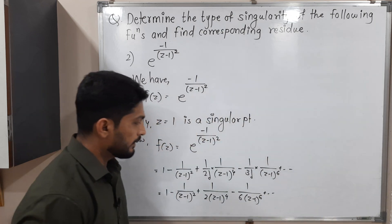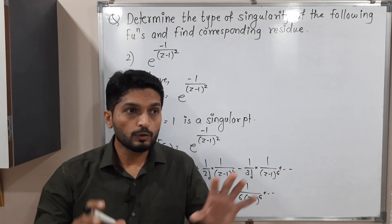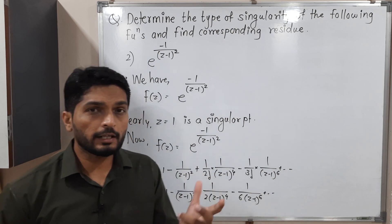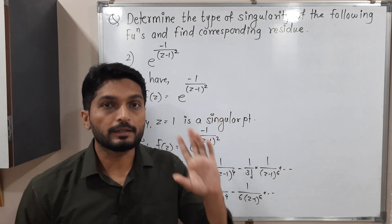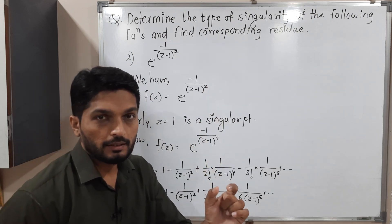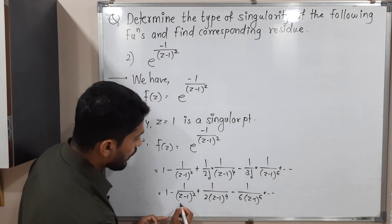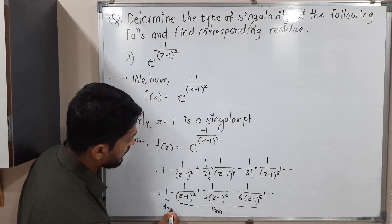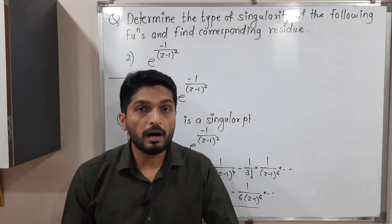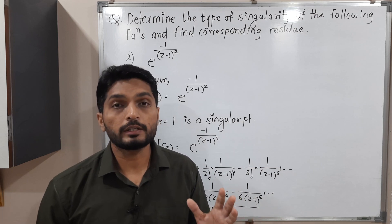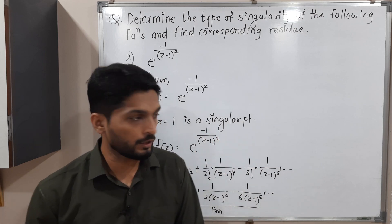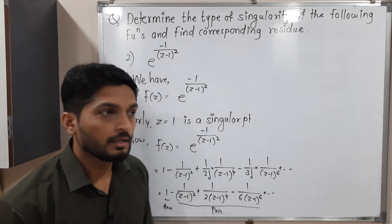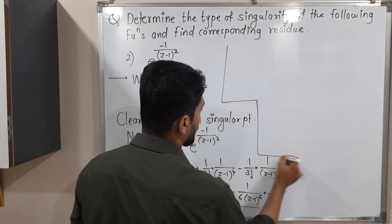The Laurent series has an analytic part and a principal part. The analytic part is where the bracket lies in the numerator, and the principal part is where the bracket lies in the denominator. All these terms have (z−1) in the denominator, forming the principal part. Since it has infinitely many terms, z = 1 is an isolated essential singularity.